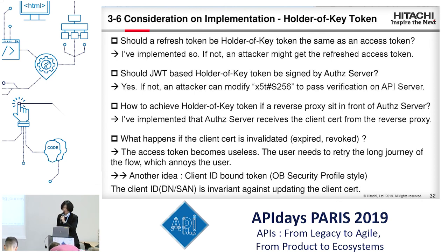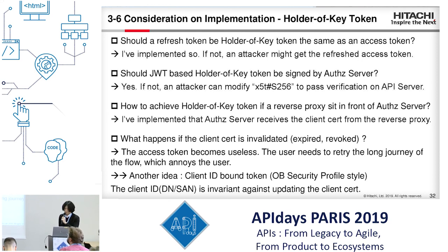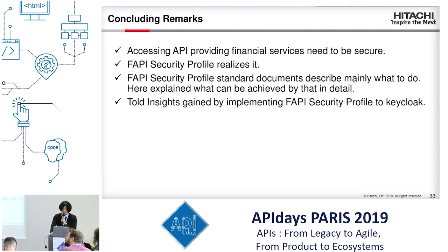The second topic is about the holder-of-key token. As I mentioned earlier, using the mutual TLS method, the access token is bound with the client application's certificate. So what happens if this client certificate expires? The access token becomes useless, and the user needs to go through the long authorization flow again, which is annoying. One idea is the client ID bound token, because the client ID is invariant against updating the client certificate. Therefore, if the client certificate expires, the access token bound with the client ID is still active, and the user does not need to repeat the long flow.